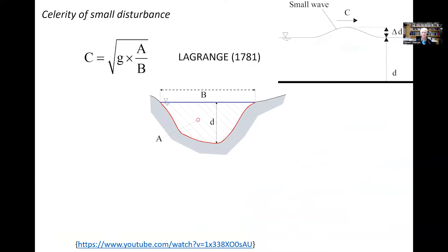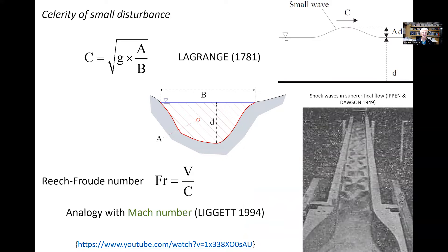We may also introduce the celerity of small disturbances. If we drop a pebble in a reservoir, the ripples propagate with a celerity equal to c = √(gA/B), a result obtained at the end of the 18th century by the French mathematician Joseph Louis Lagrange. The Froude number can thus be expressed as the dimensionless ratio of flow velocity to the celerity of a small disturbance — analogous to the Mach number, whereby supercritical flow is analogous to supersonic flow.